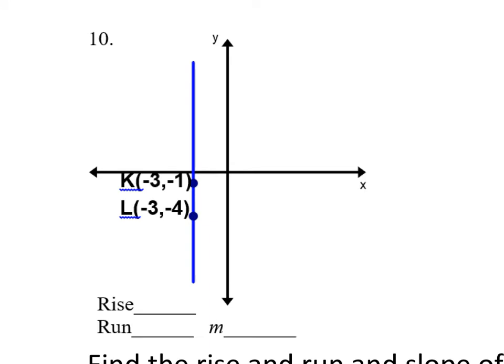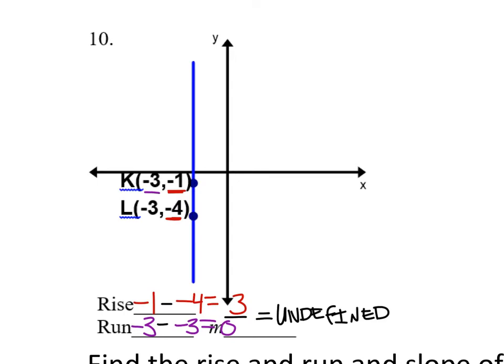On number ten, we'll do the same thing with the y values. I've got a negative one y value and a negative four y value. Subtracting gives negative one minus negative four, which is negative one plus four — that's three for the rise. The run goes from x value negative three to x value negative three — when I subtract these I get zero. That means the slope is three over zero. How many zeros go into three? An infinite number — so this is undefined slope. We can see visually that there's no steeper line than this one; it's so steep we can't even quantify the slope because it's straight up and down.